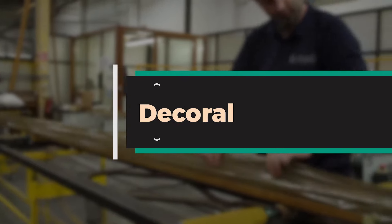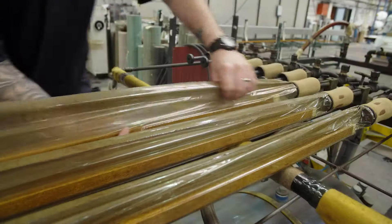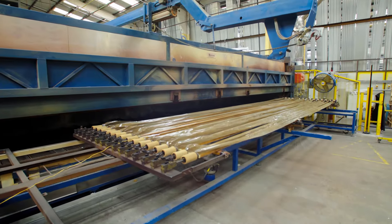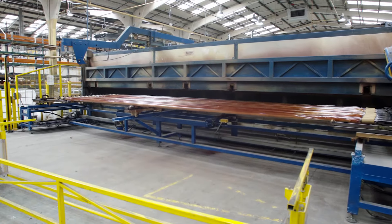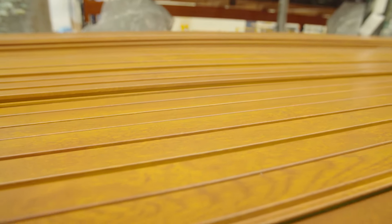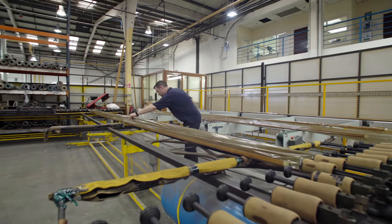DECORAL is a process of applying a wood grain finish onto aluminium profiles. This hard-wearing finish has the benefit of a long service life, with an aesthetically pleasing design and none of the maintenance costs.